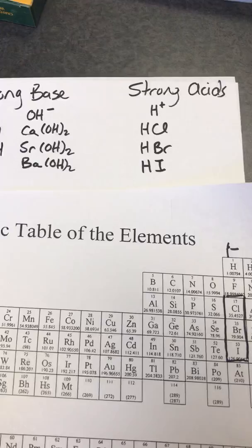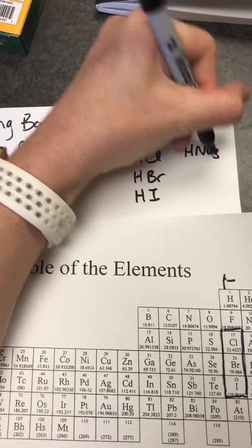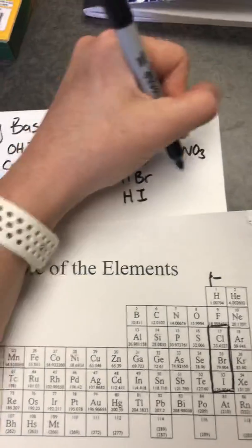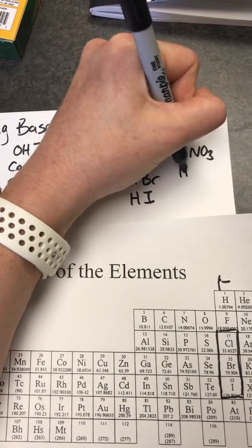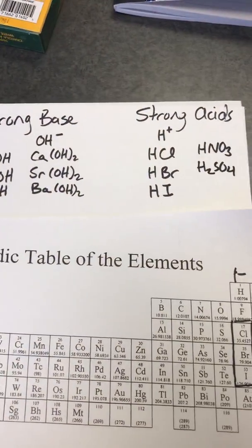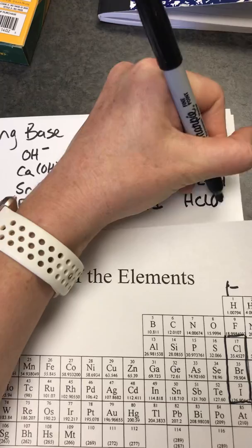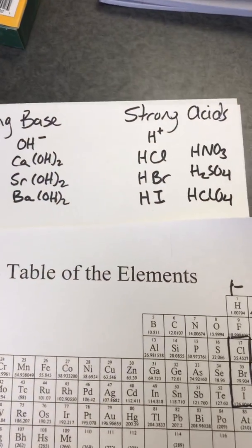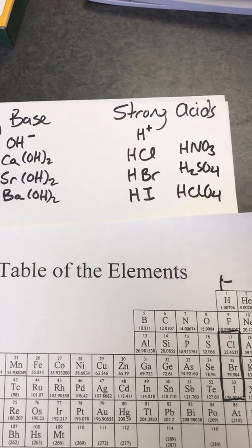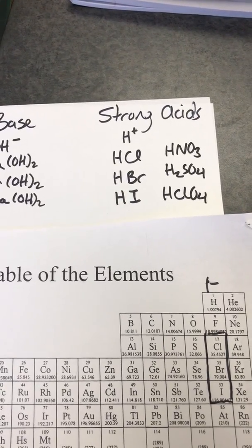Now there's 3 more you just have to memorize. Nitric, sulfuric, and perchloric acid, HClO4. So HNO3, H2SO4, and HClO4.